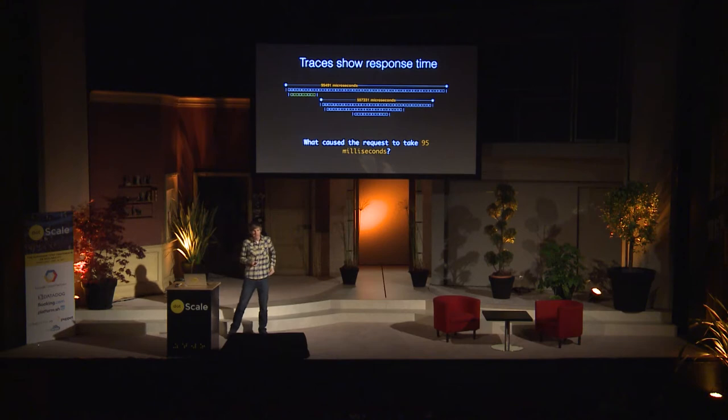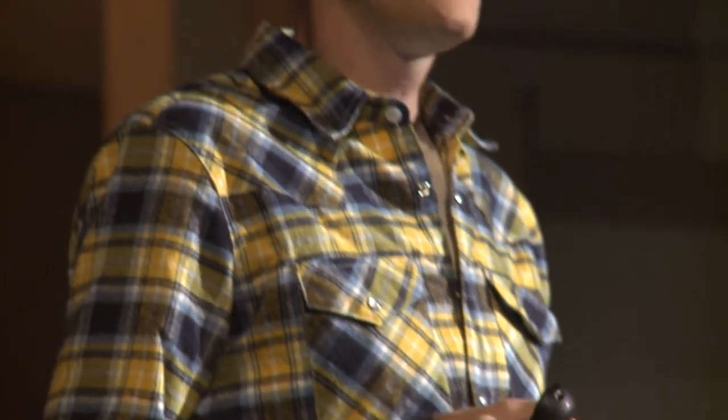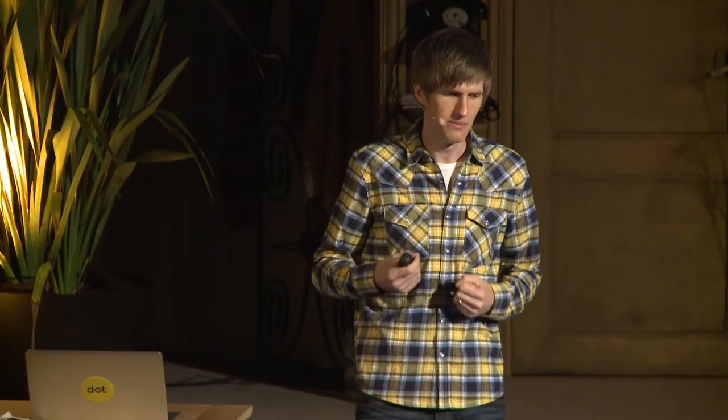Traces are interesting because you've got causality — you can tell what happens before something else, and in many visual ways what the impact of something is. If this was a 95-millisecond request, we could see through a trace that perhaps there was an error that delayed the processing of that request, and if that error didn't exist it would have actually been a pretty quick one. So within the scope of a single request, we can understand the impact and maybe what a remediation would be.